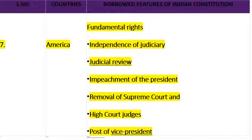Next आता है America। America के constitution से क्या-क्या लिया गया है? Fundamental Rights — जो हमारे मूल अधिकार हैं, वो America के constitution से लिए गए हैं। Independence of Judiciary — न्यायपालिका की स्वतंत्रता — America के constitution से लिया गया है। Judicial Review — न्यायिक पुनरावलोकन — यानि कि अगर कोई law बनाया जा रहा है, वो किसी के fundamental right का violation तो नहीं कर रहा है। Supreme Court उस law का review करता है।